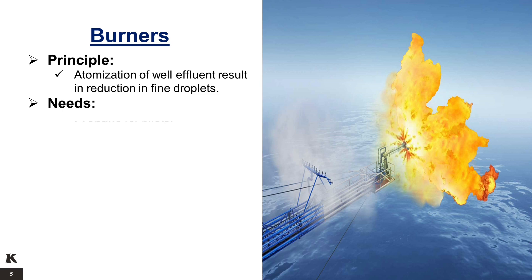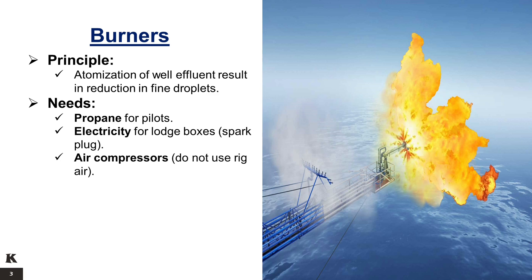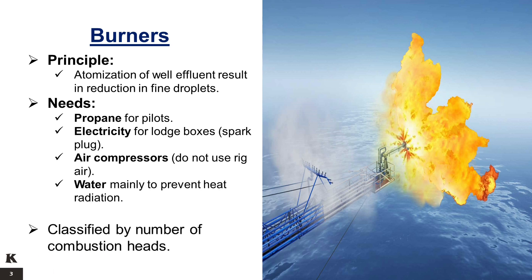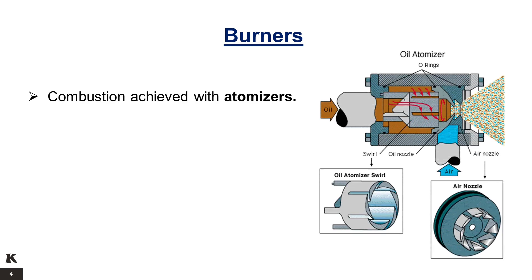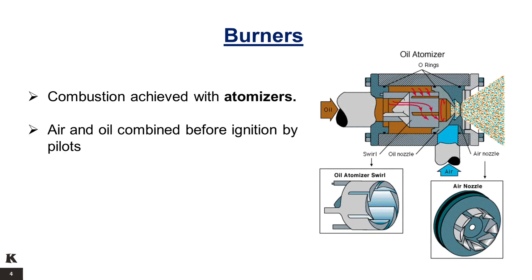The burner needs propane for pilots' light, electricity for lodge boxes or spark plug, dedicated air compressors — do not use rig air — and water, which is mainly required to prevent heat radiation. The burners are classified by number of combustion heads, which determines the maximum oil flow rate. Oil combustion is achieved with oil atomizers, where the air and the oil are combined in the atomizer before ignition by the pilots.